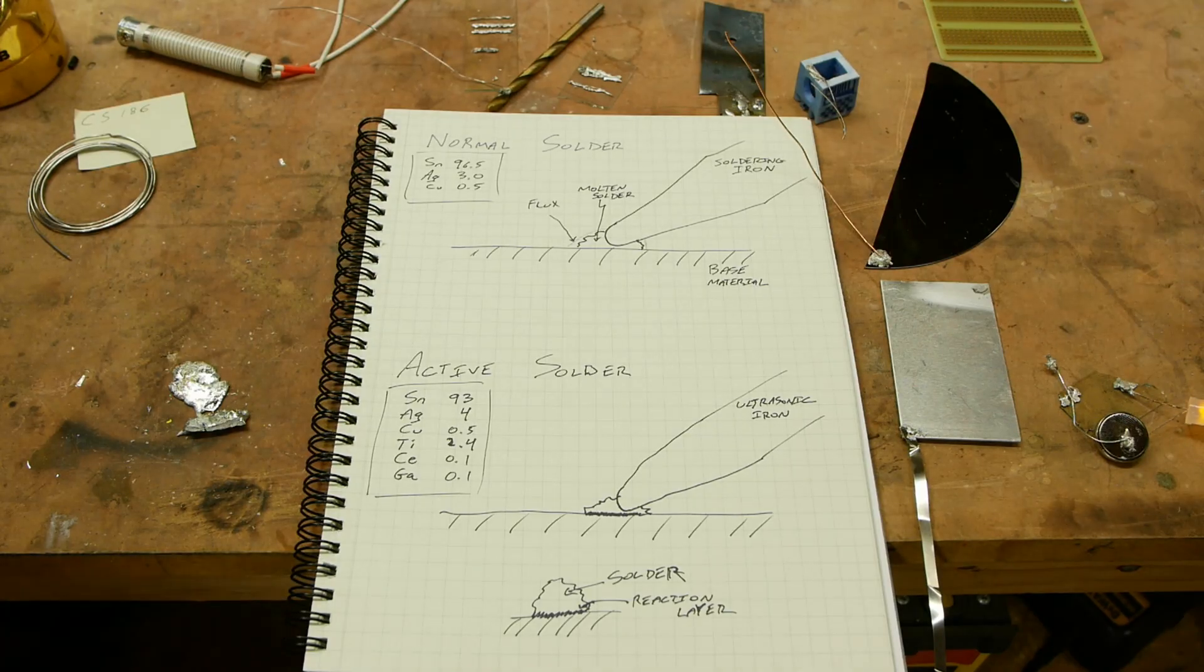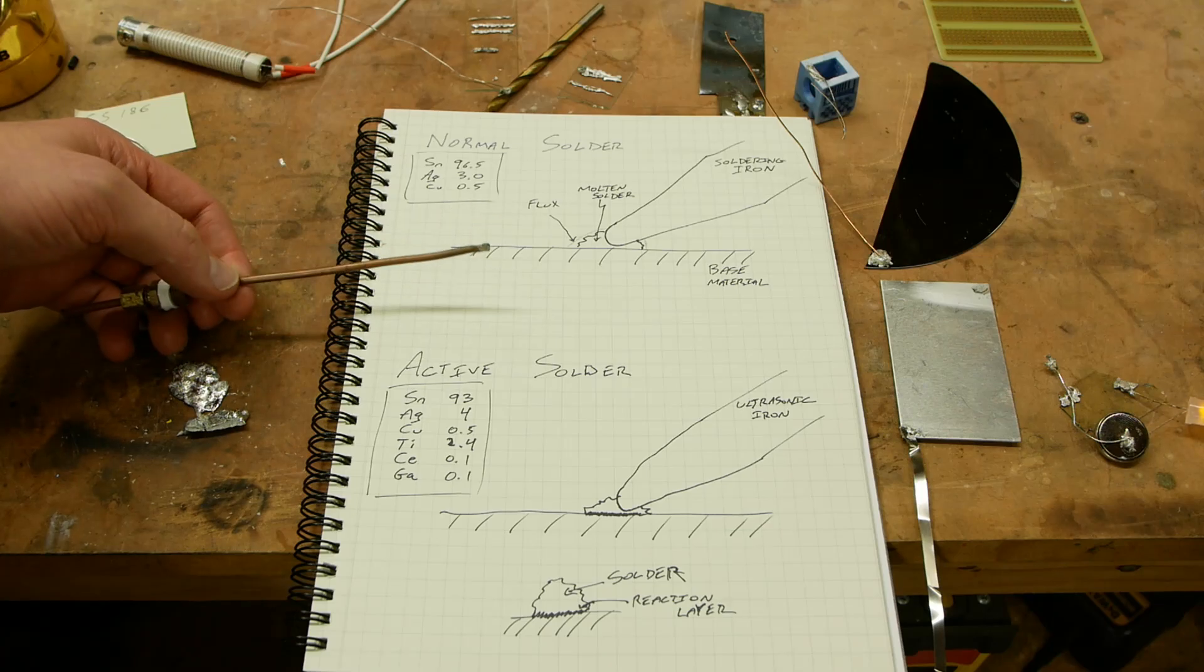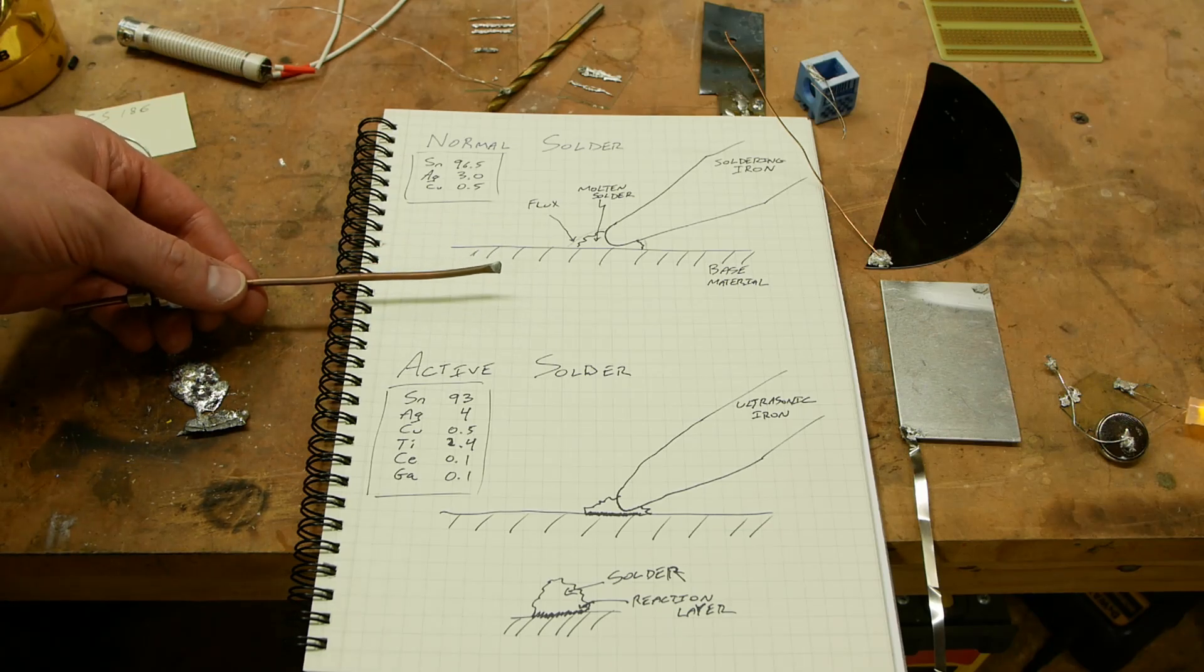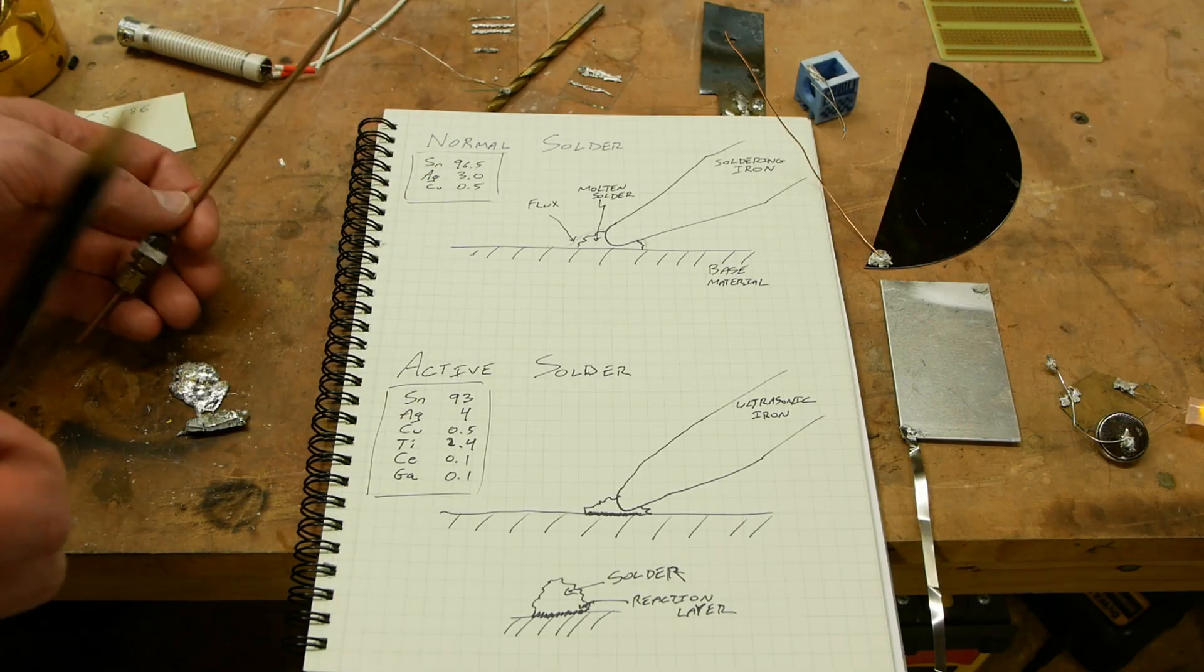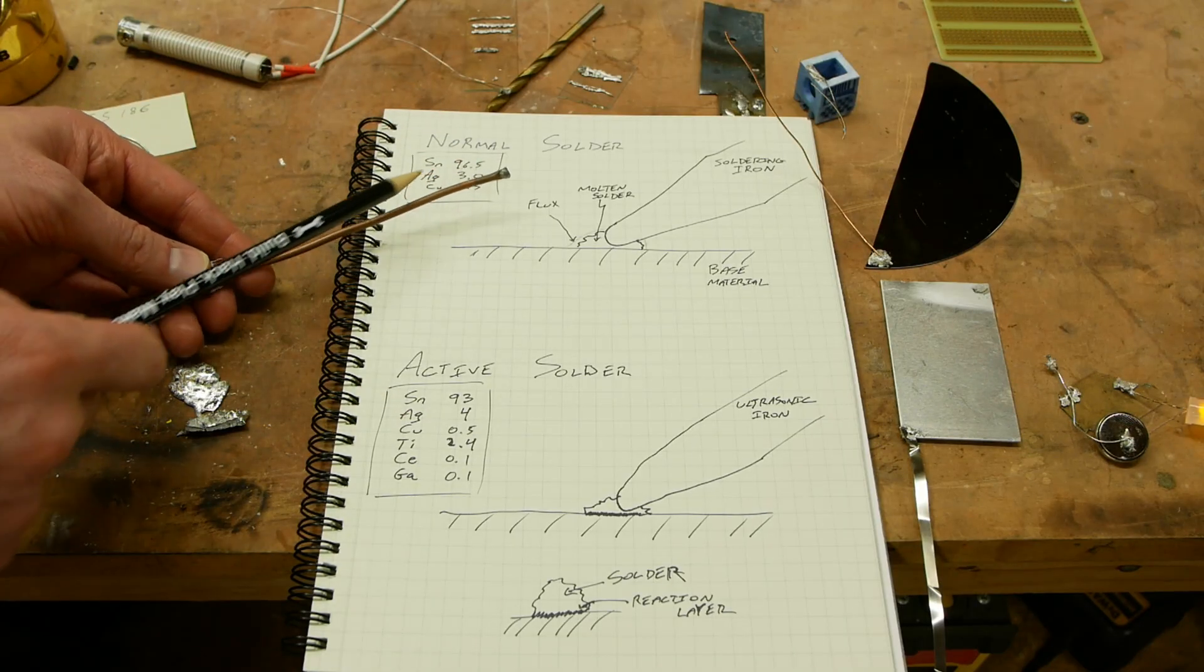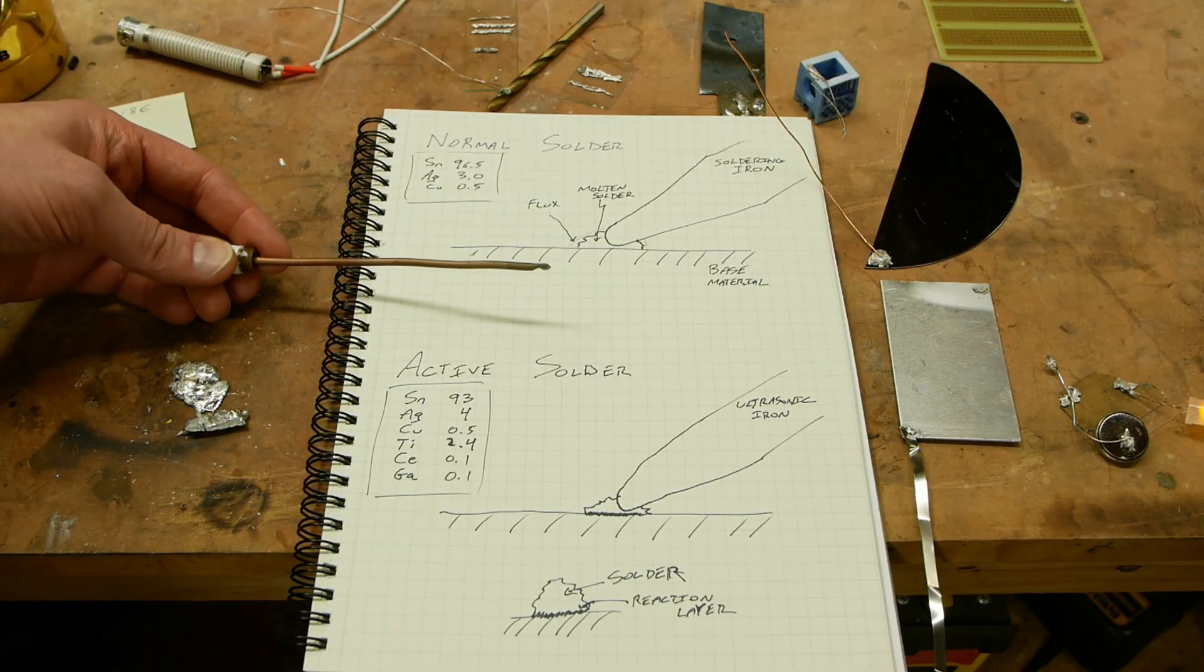One thing that I always found paradoxical is that if you don't clean certain types of flux off the metal after you're done with it, it will actually cause the metal to corrode. So how could it be that flux removes corrosion and then also causes it?